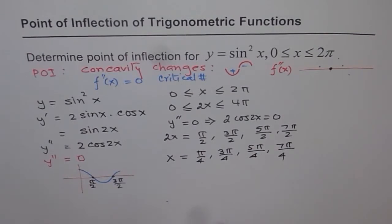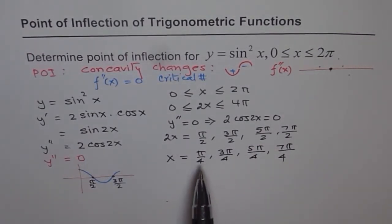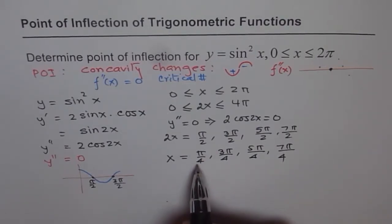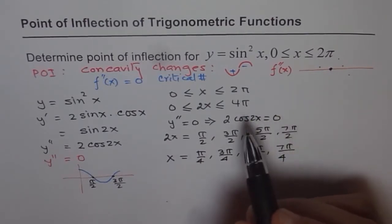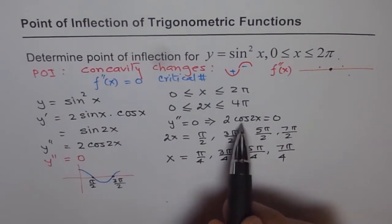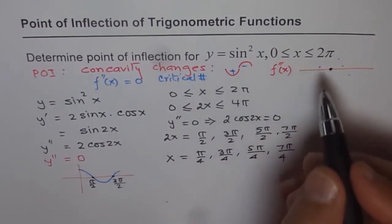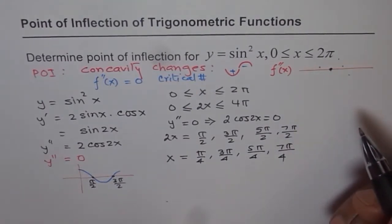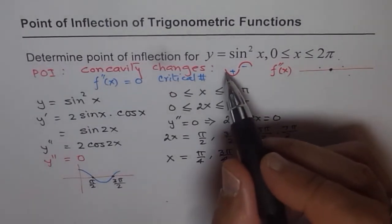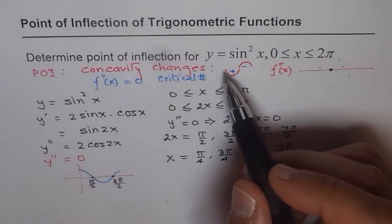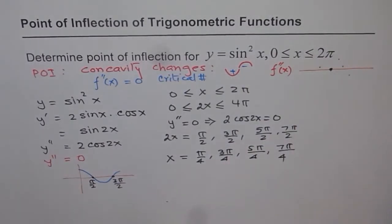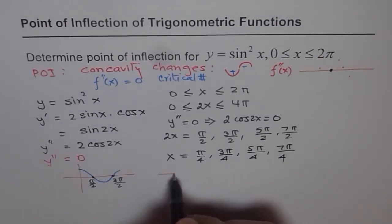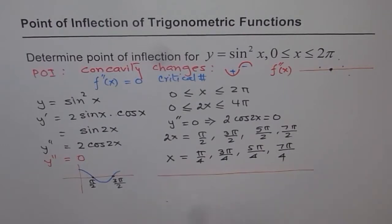These are the possible points where we could have a point of inflection. Now we need to test the sign of y'' = 2 cos 2x on the left and right side of each critical point to check whether the concavity actually changes. Let me draw the x-axis and mark π/4 here to illustrate.